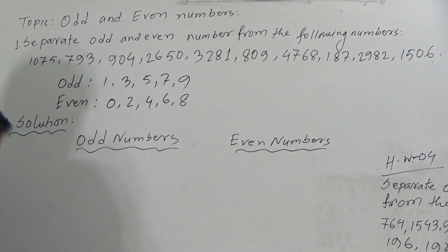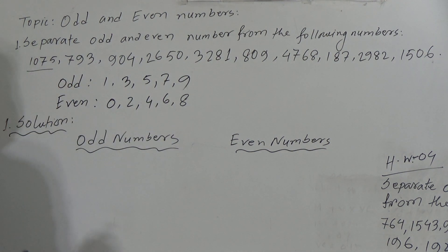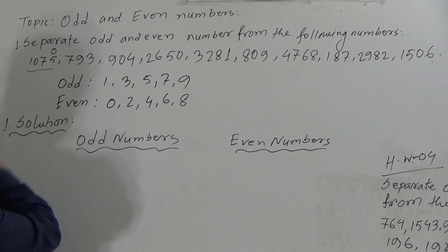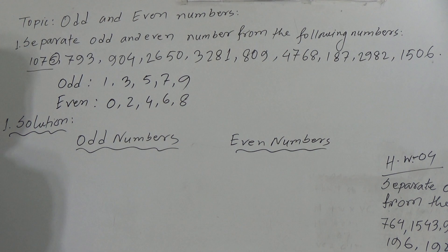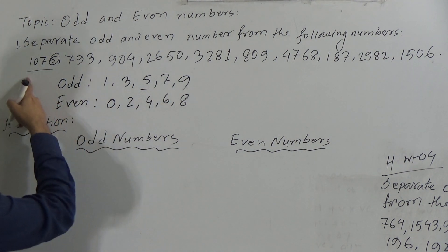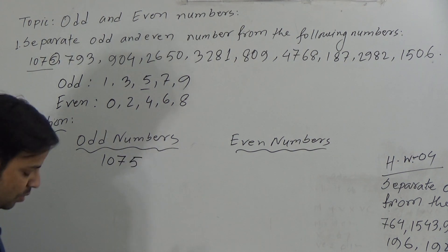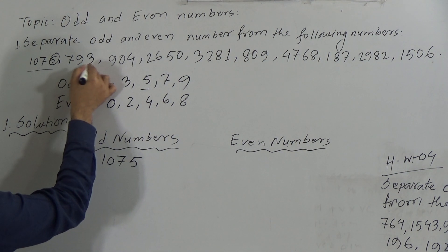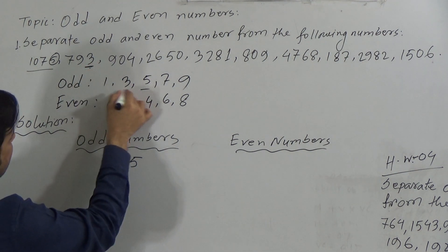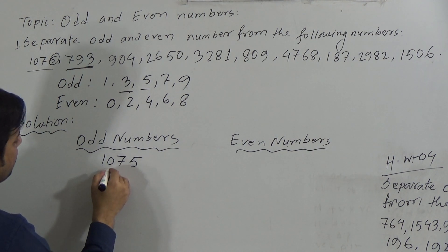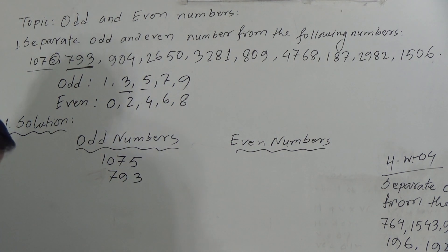Dear students, the first number here is 1075. To know if a number is odd or even, we just notice the digit in the unit place or ones place. Here the ones place is 5. Since 5 is odd, the number 1075 is odd. Now the next number: the unit place here is 3, and 3 is odd, so the number 793 is odd.